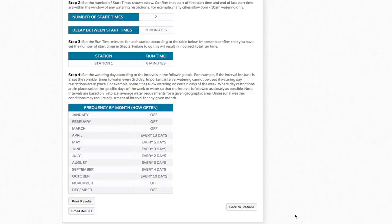You can click the Print Results button to get the information printed out on your computer. Or you can click the Email Results button to have it emailed to an email address.